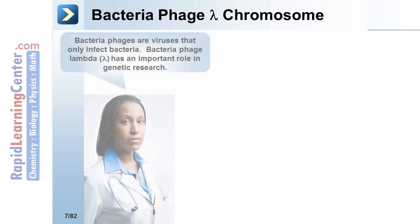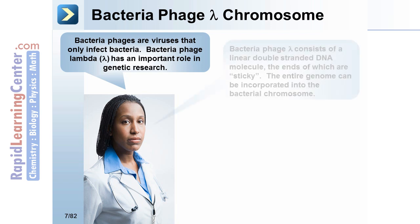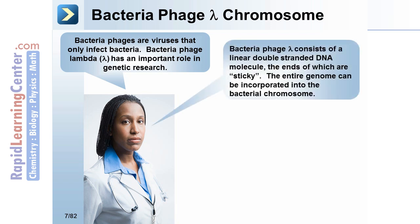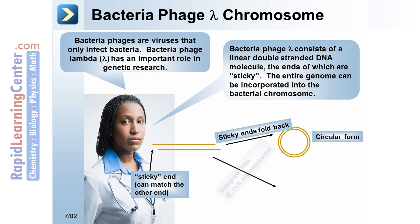Bacteriophage lambda chromosome. Bacteriophages are viruses that only infect bacteria; bacteriophage lambda has an important role in genetic research. Bacteriophage lambda consists of a linear, double-stranded DNA molecule, the ends of which are sticky. The entire genome can be incorporated into the bacterial chromosome. The sticky ends can match each other, fold back into a circular form, and integrate into the E. coli chromosome.